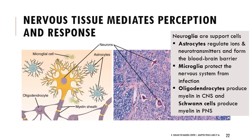Glial cells have their own structure and function quite different from neurons. Another word for these is neuroglia - the 'glia' tells you they are support structures. There's a term you might see in anatomy and physio called ganglion, which looks like it has 'glia' in it but actually refers to a group of neurons, not support cells. Neuroglia or glial cells specifically refers to non-neuronal support cells.